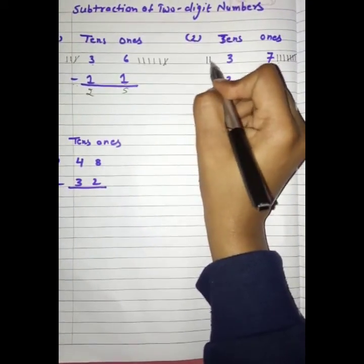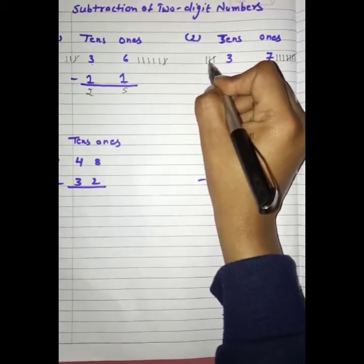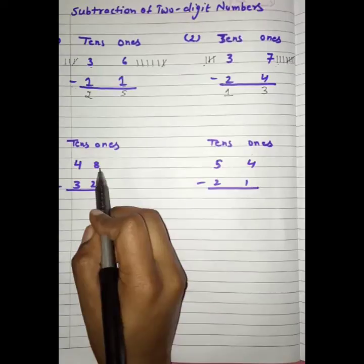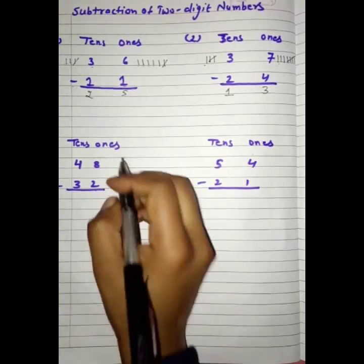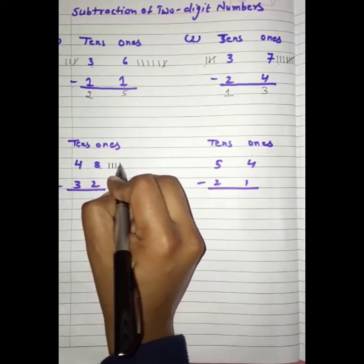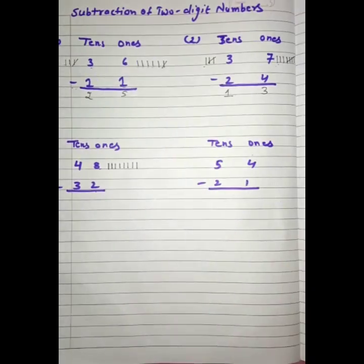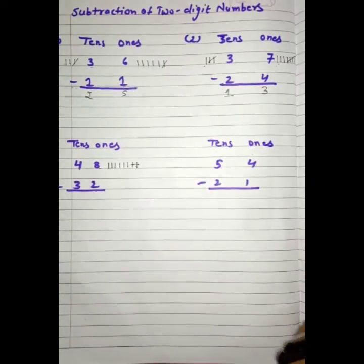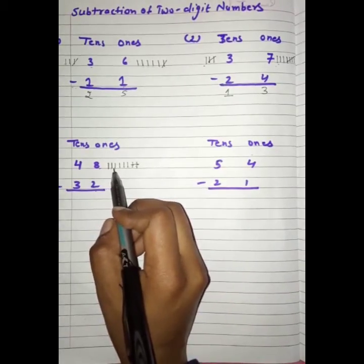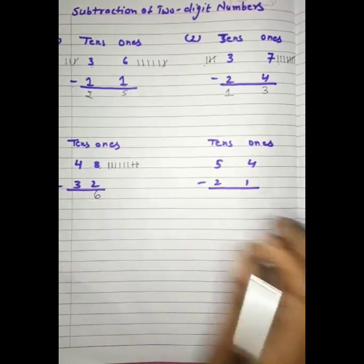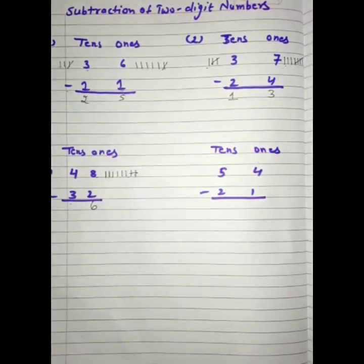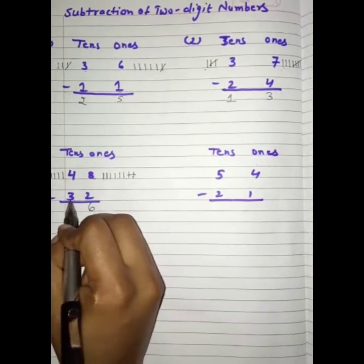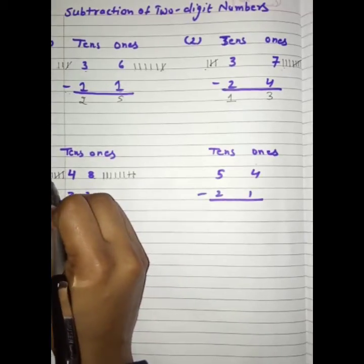Similarly, yaha par hum 3 lines draw karenge and 2 hum minus kar denge. Kitnay bachenge? 1. So, students, see the next question: 8 minus 2. Hame 8 minus 2 karna hai. Hum 8 lines draw karenge: 1, 2, 3, 4, 5, 6, 7, 8. Aab hum 2 minus kar denge: 1, 2. Ab kitnay bachye: 1, 2, 3, 4, 5, 6. We have 6 here. And now 4 minus 3. Hum 4 lines draw karenge and 3 minus kar denge: 1, 2, 3. Kitnay bachye? 1.